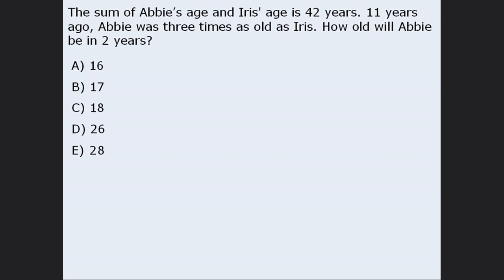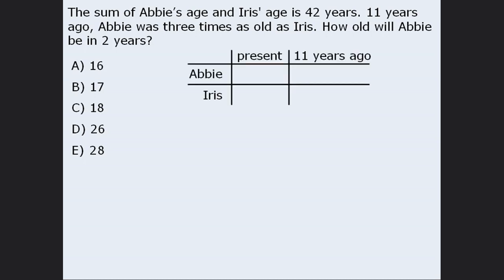Now let's solve another age question. We'll solve it using one variable, and then using two variables. In this question, we are given information about present ages and ages 11 years in the past. We'll create a table with both time periods as columns. It's often useful to assign the variable to the smallest unknown value. The second sentence tells us that Abby is older than Iris, so let's assign a variable to Iris' age. Let I represent Iris' present age.